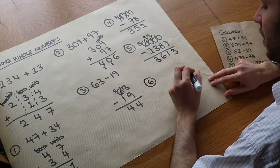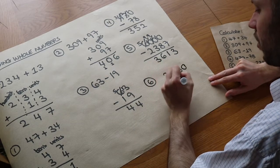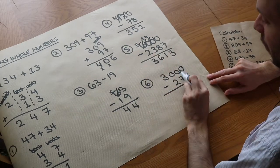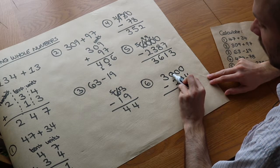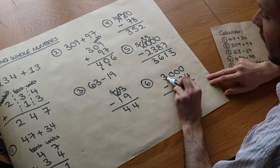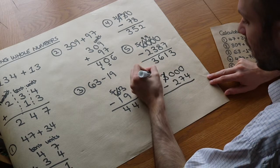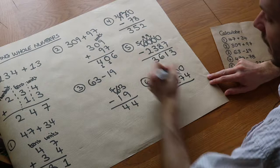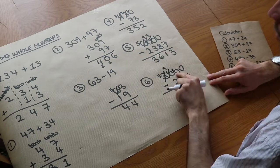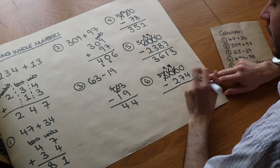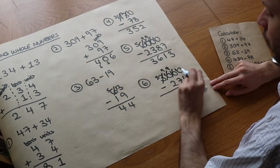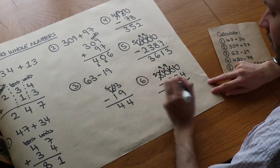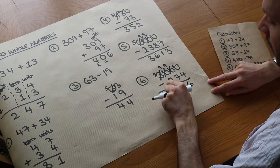Let's do one more example: 3000 minus 274. We can't do 0 minus 4, and we can't borrow from the next digit because it's 0, and the next is also 0, so we borrow from the 3 thousands — it becomes 2. We put a 1 in front of the hundreds making it 10; that becomes 9 as we pass the borrow along, giving a 1 in the tens; that becomes 9 again as we pass the borrow, giving a 1 in the units. So: 10 minus 4 is 6, 9 minus 7 is 2, 9 minus 2 is 7, and 2 minus nothing is 2. The answer is 2726.